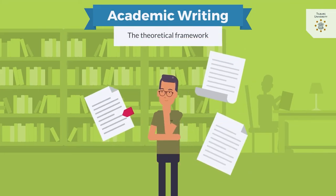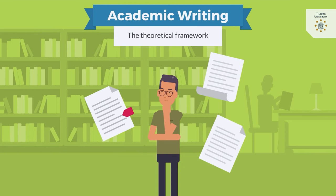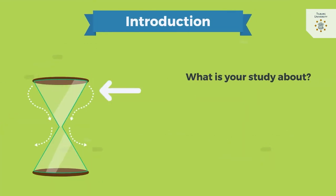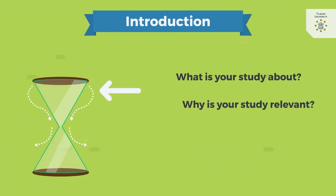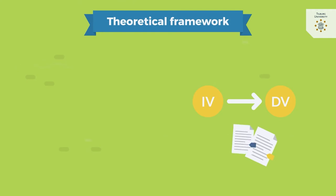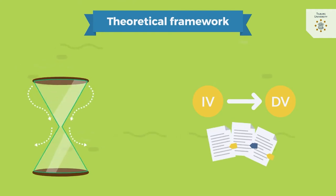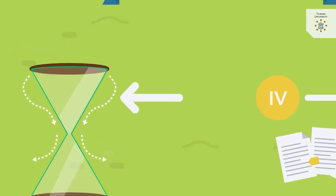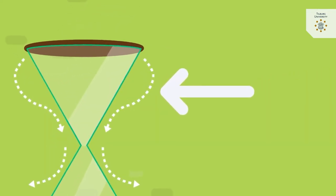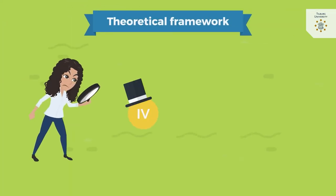This knowledge clip explains how to set up the theoretical framework of your paper. In the introduction, you have explained what your study is about and why it is relevant to study the relationship between your variables. In the theoretical framework, you elaborate on this relationship. If you think about the hourglass that represents the structure of a paper, you are now moving into the narrowest part. This means that you focus on your two variables and how they are related.